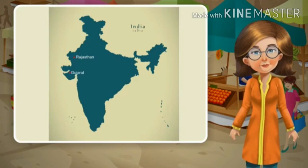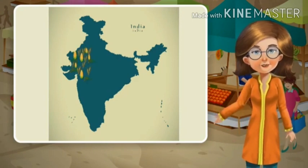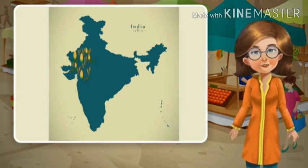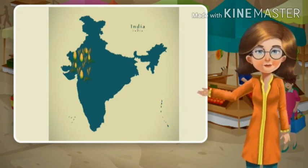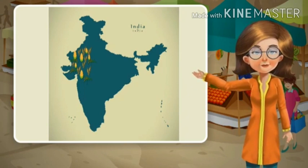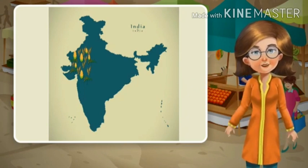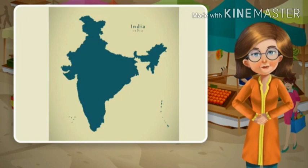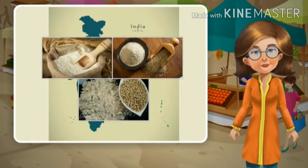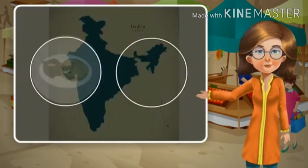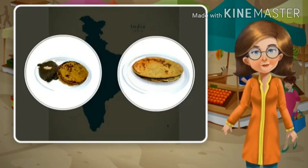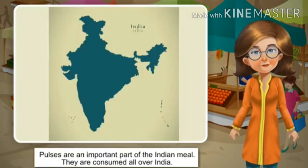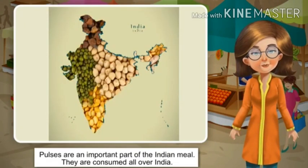In western parts of India, such as in the states of Rajasthan and Gujarat, wheat along with other food grains such as jowar, maize, and bajra are consumed. These crops are mostly used to make flour, which is then used to make chapatis and rotis.